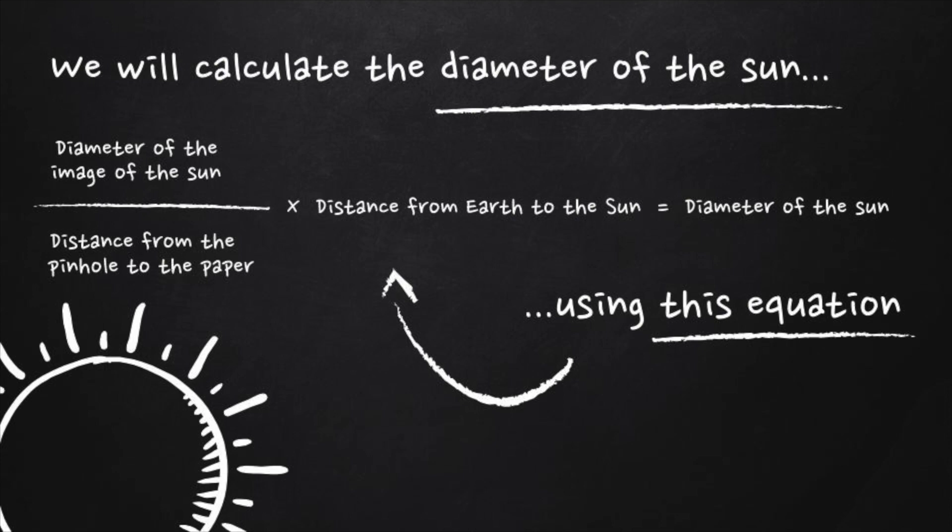It has a fraction of the measurements we need to make. We need to record the diameter of the image of the sun on our paper that we will make with our viewer, and we need to record the distance from the pinhole viewer to the image on our paper. We are going to divide these two measurements in our fraction. Then we will multiply the distance from the Earth to the sun.